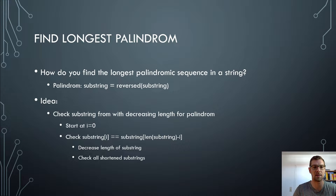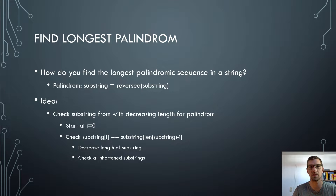If it is not a palindrome, then we check the palindrome of the string one in length shorter. Basically, if the string is length 6, then we have two substrings of length 5 — one from the first position to the fifth position, and one from the second position to the sixth position.